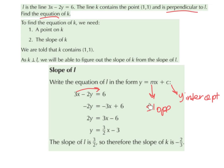Now we have y on its own: y equals 3 over 2x minus 3. The slope of the line is the number stuck onto the x, which in this case is 3 over 2. The y-intercept is minus 3. So the slope of the line L is 3 over 2.